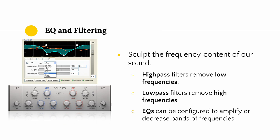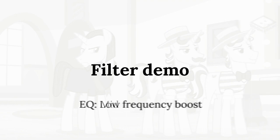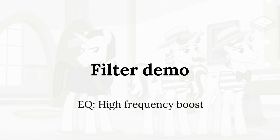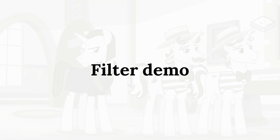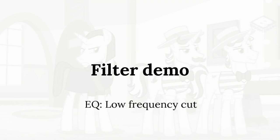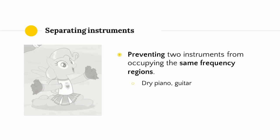If I apply an EQ to my voice, I can choose to boost the low frequencies, boost the medium frequencies, or boost the high frequencies — or I can choose to cut these frequencies as well. The general principle behind EQ and filtering is that if we want two instruments to stand apart from each other, we need to make sure that, in terms of frequency content, they're occupying different parts of the frequency range.